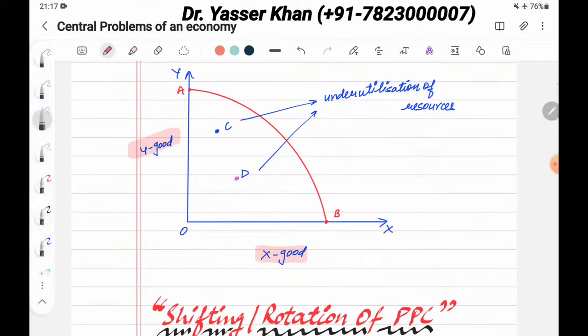For example, D point. You make Y good so much and X good OX. Let OX1 make Y good OY1. If you reach this, if you have to transfer this, if you change this much to E point, do you know what?